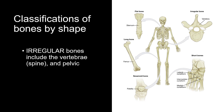The fourth type of bone is the irregular bone. Irregular bones are bones that do not fit into any of the other categories due to their unique shapes. They are often quite complex and provide a variety of functions depending on their location in the body. Examples of irregular bones include the vertebrae of the spine and the pelvic bones.